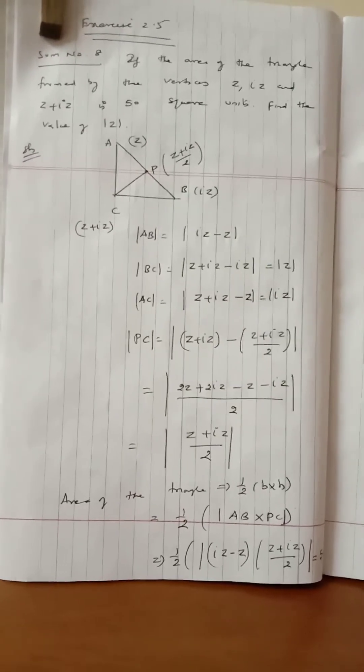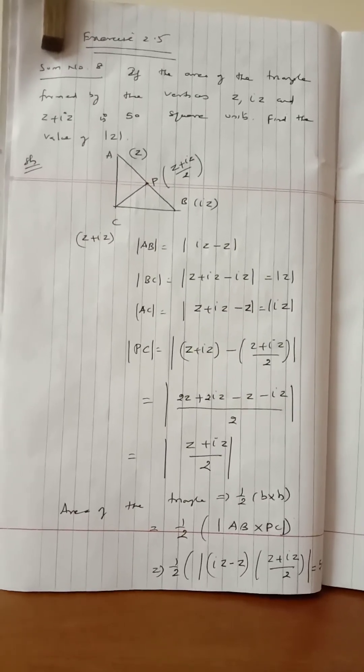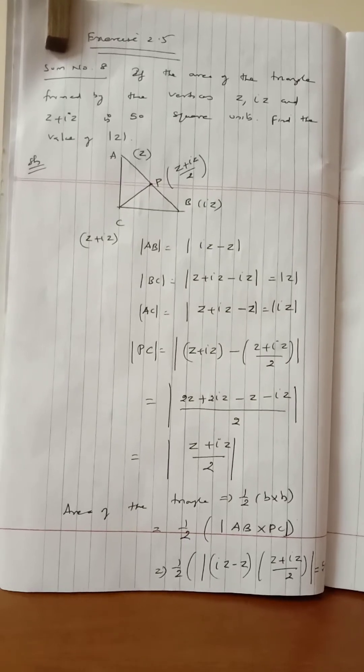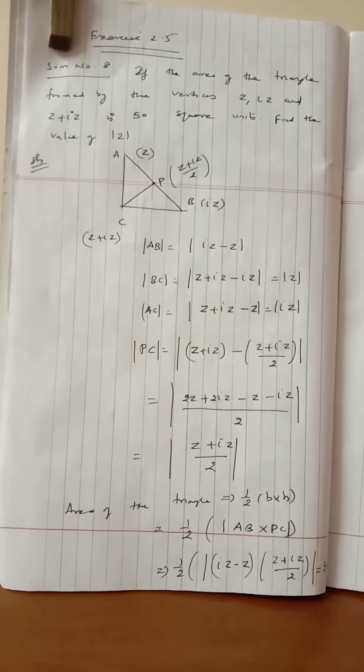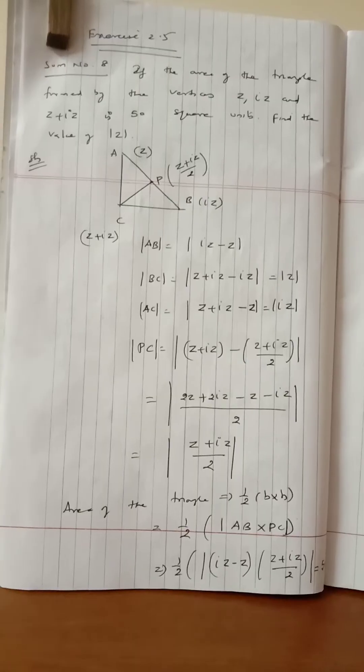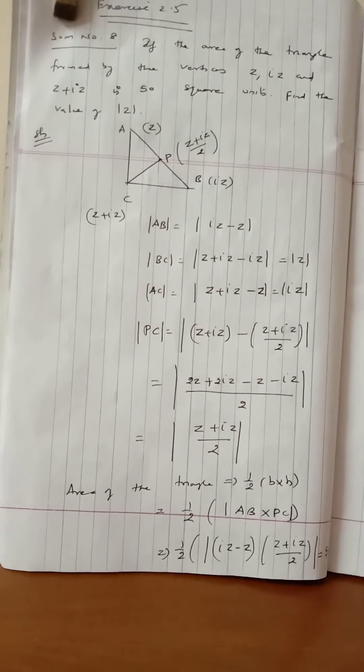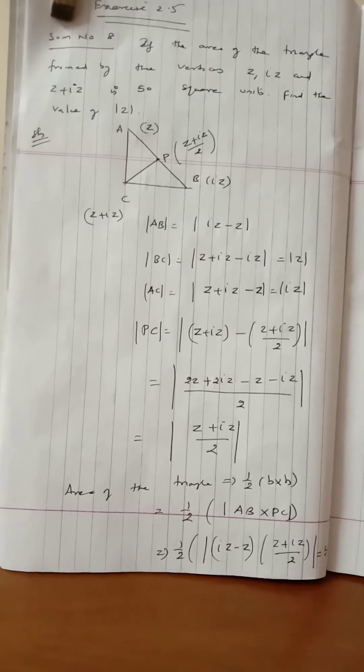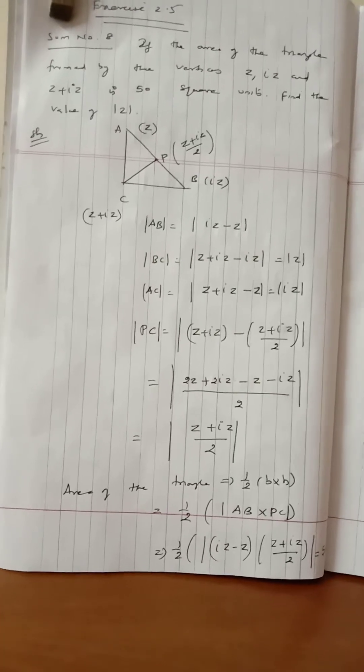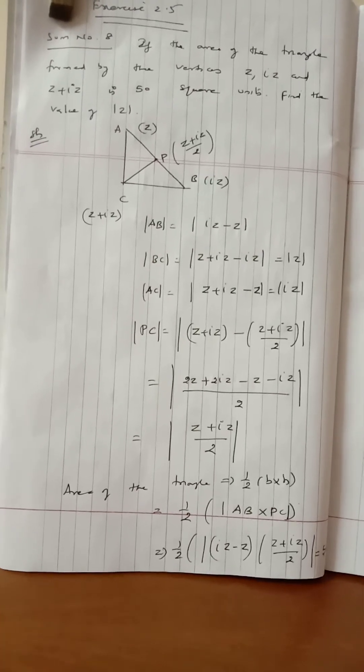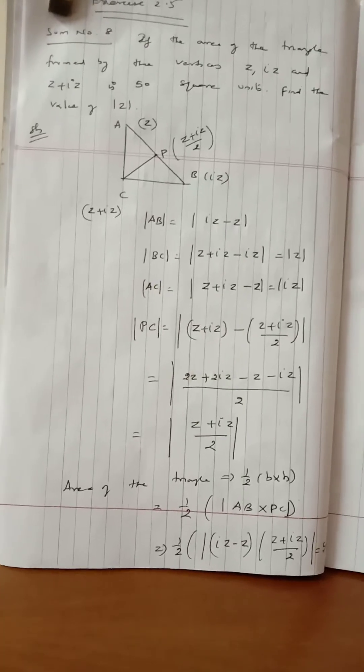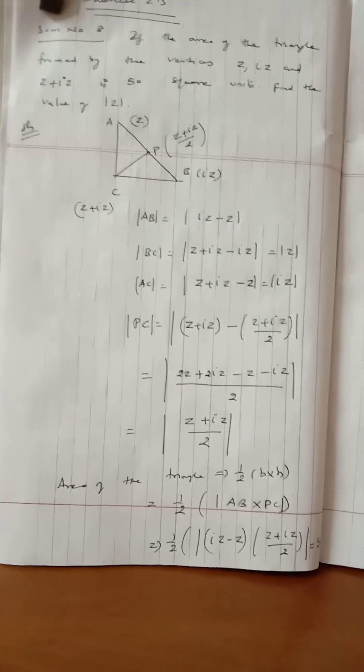That's z plus iz minus the quantity z plus iz over 2. This gives 2z plus 2iz minus iz over 2, which simplifies to z plus iz over 2. So the modulus of z plus iz over 2.